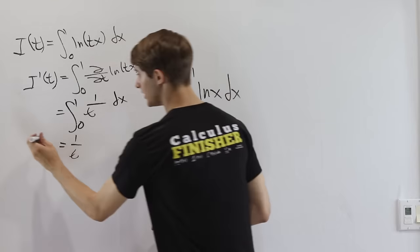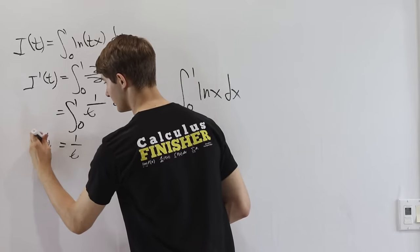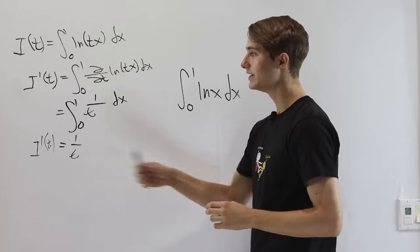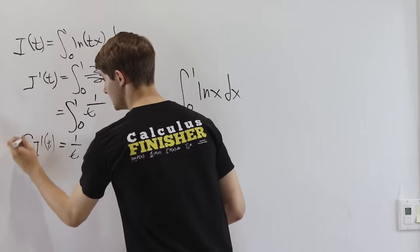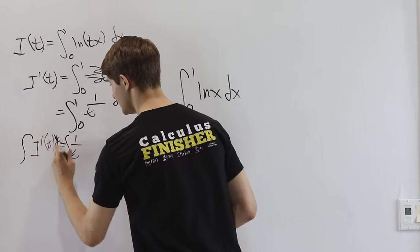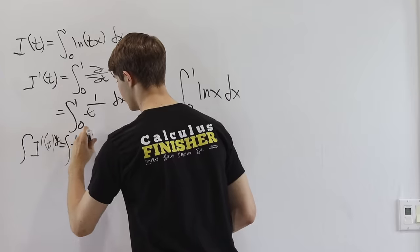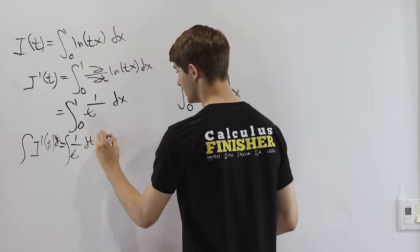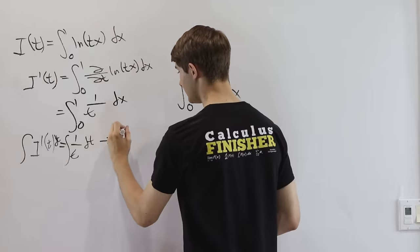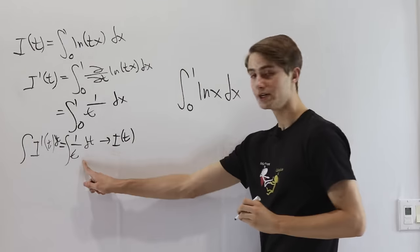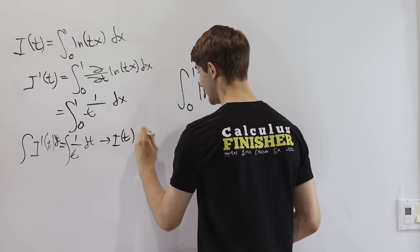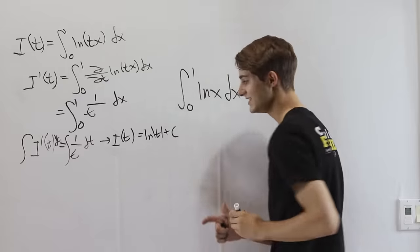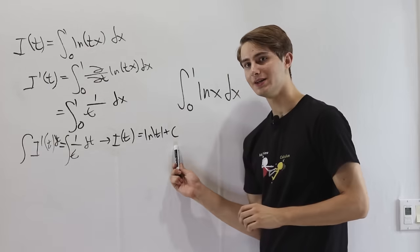So i prime of t equals 1 over t. Now we can integrate both sides. If we integrate i prime of t dt and integrate 1 over t dt, we get i of t equals natural log of absolute value of t plus C.